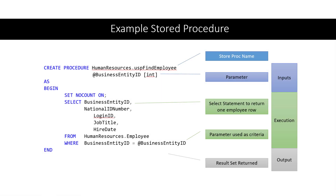Here we have an example of a stored procedure. I don't want you to get too intimidated by everything — we will go through constructing stored procedures and learning about all these elements in a future part of the course. But it's important to start learning an overview of what the pieces are. Each stored procedure has a name; here we have one called USP Find Employee, named for what it does: find an employee in our database. This procedure accepts a parameter that allows us to receive an input and use it later in the stored procedure.